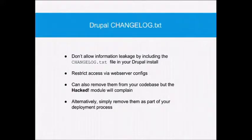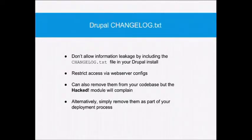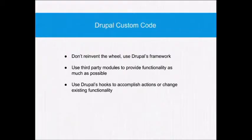Changelog.txt: if you go to a Drupal site and type in changelog.txt, you'll sometimes find it tells you the exact version of Drupal that's running. Not necessarily a bad thing, but in my opinion it gives a little too much information about what's going on inside the system. The best way to get rid of these is to restrict them via web server config. You can remove them, but the Hacked module — which checks to see if there are any code changes inside Drupal — will complain about that. Alternatively, you can delete them during your deployment process.